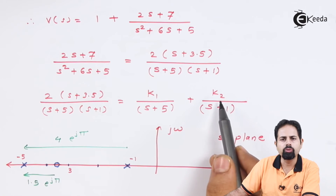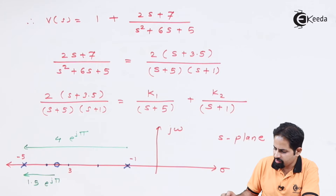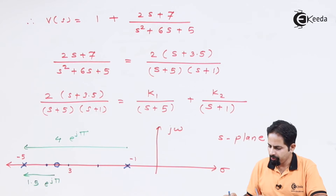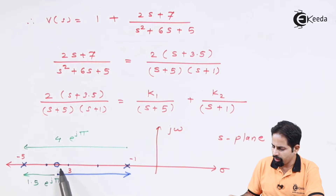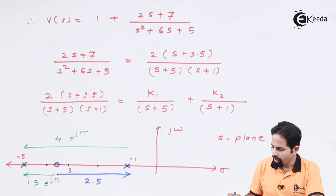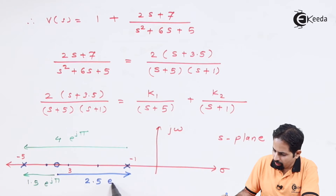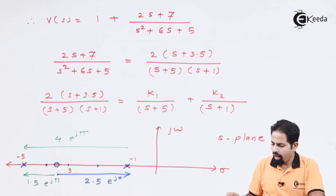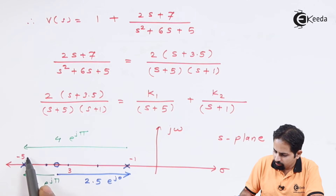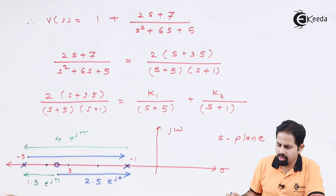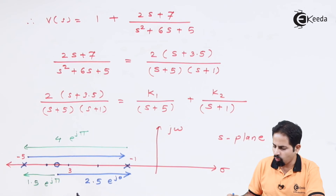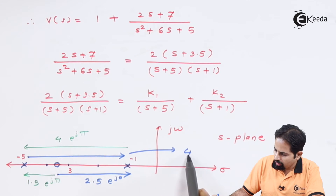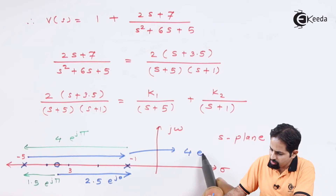k2 is the residue related to the pole at s equal to minus 1. We draw one vector from the zero at minus 3.5 to this pole; the length will be 2.5, and the angle is 0, so it is e raised to j 0. For the second pole from s equal to minus 5 to s equal to minus 1, the length is equal to 4, and the angle is also 0, so it is e raised to j 0.